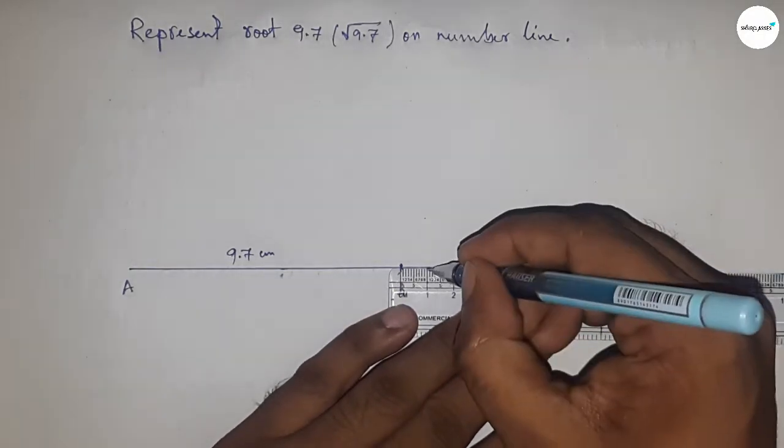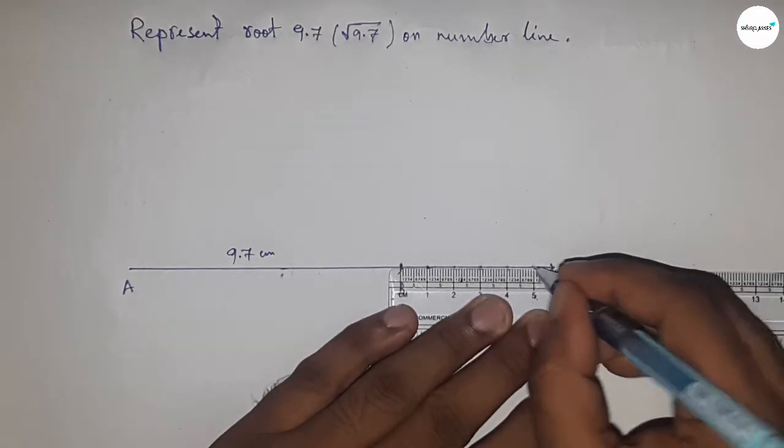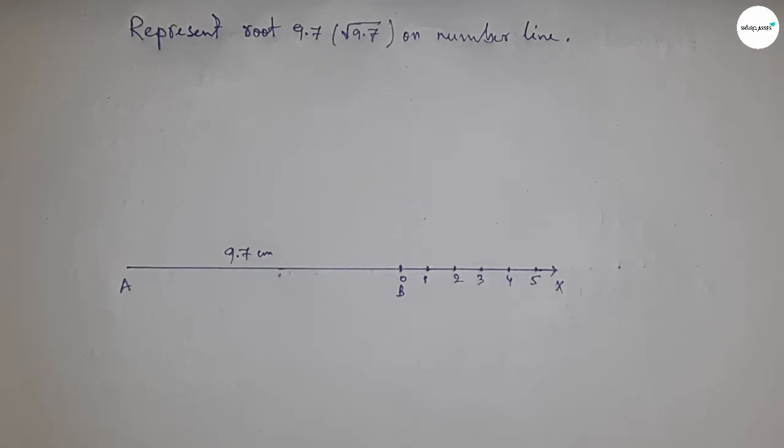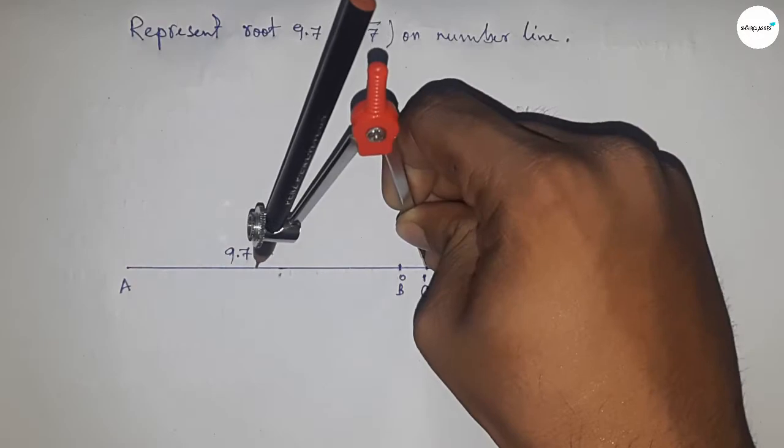Now mark the numbers on the line from B to X using a scale: 0, 1, 2, 3, 4, 5, and so on. Mark point C at 1 centimeter from B.